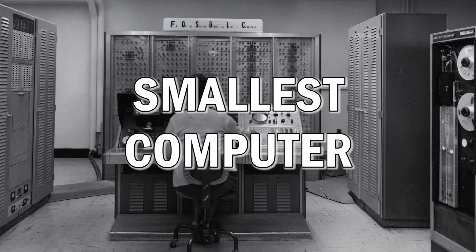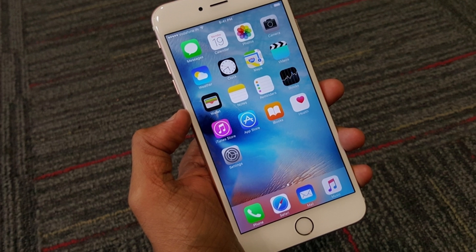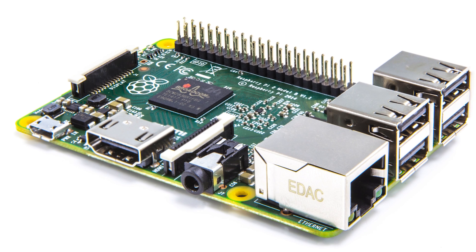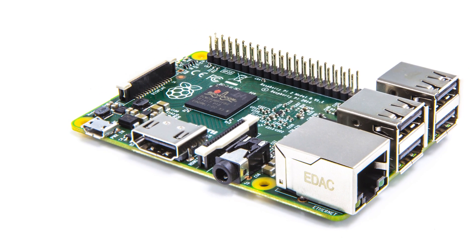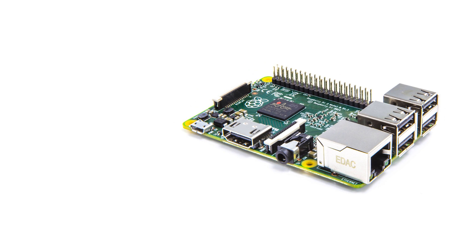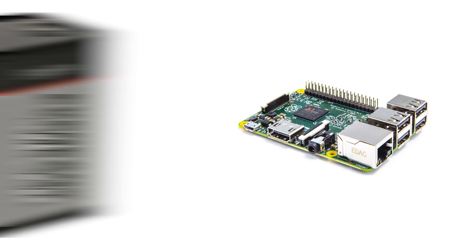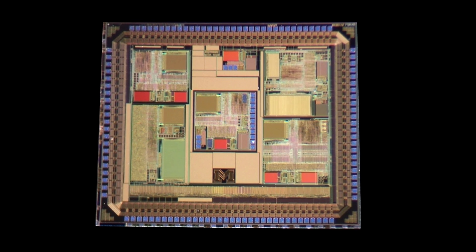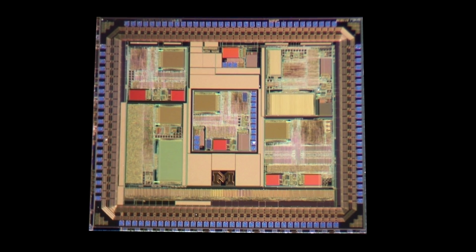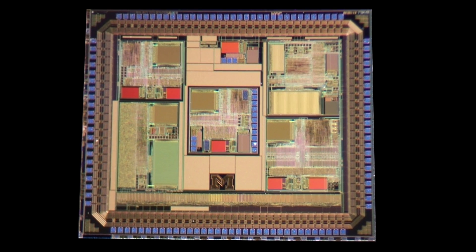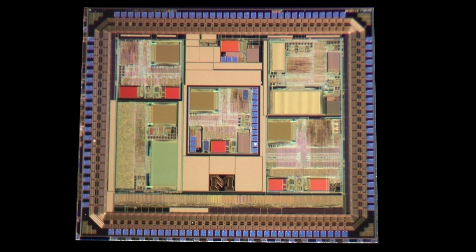We're used to seeing computers getting smaller and more powerful, but the biggest stumbling block to making truly tiny computers is that whilst the physical components can be shrunk, the power required is still quite high, so even a tiny computer would need a big battery in comparison. The breakthrough came in 2008 when the Phoenix processor was created, which used a fraction of a power of previous processors and allowed much smaller self-contained computers to be created.